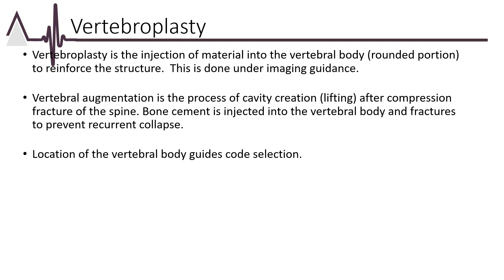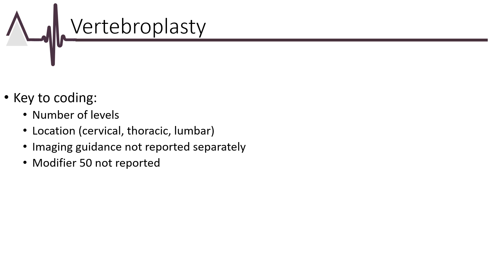Vertebroplasty is the repair of a vertebra or the rounded portion of the segment which has been fractured, where bone cement is injected under imaging guidance to reinforce the structure. Similarly, vertebral augmentation injects bone cement into a vertebra that has suffered a compression fracture; however, prior to injection, the vertebrae are lifted and separated to create a cavity and placed back into normal anatomical position. When billing for vertebroplasty, key factors include the number of levels or segments being repaired and the specific portion of the spine — cervical, thoracic, or lumbar. Per guidelines, imaging guidance is not separately billable, and the codes are defined as unilateral or bilateral, making Modifier 50 not billable with these codes.